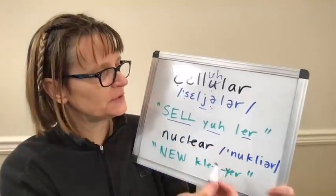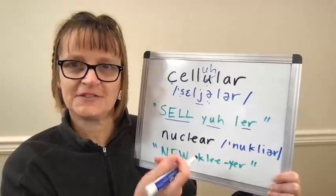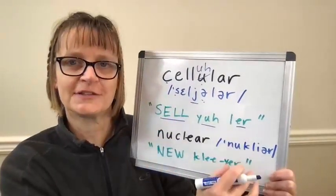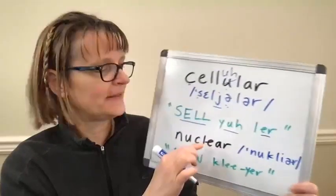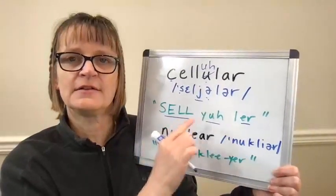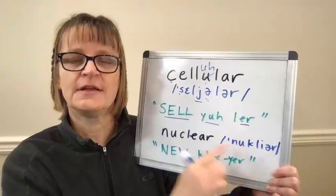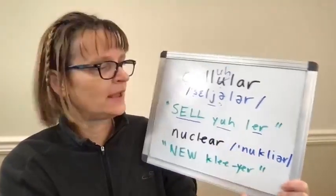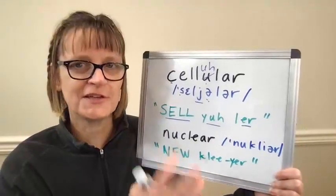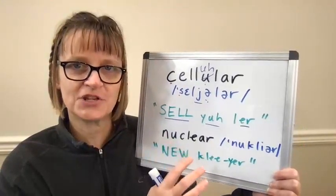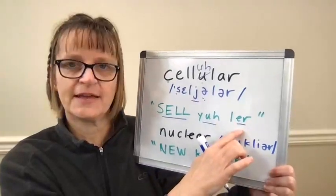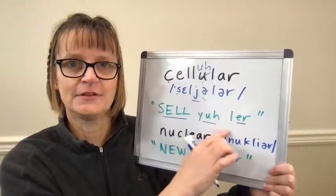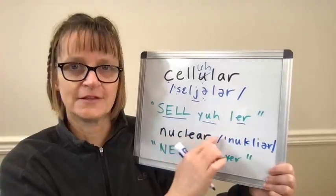To build this word 'cellular,' there are a couple of techniques I would suggest. One, break it down syllable by syllable, saying it slowly and speeding it back up: 'cell-ya-lar,' 'cellular,' 'cellular.' Another would be to build this one from the back, just because that L-R combination can be challenging: 'er,' 'l-r,' 'y-l-r,' 'cellular.'